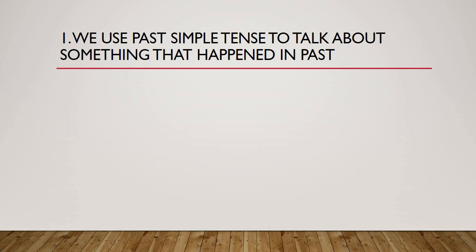Verb ki teen forms hoti hain — aapko pata hoga. First form hoti hai jo present simple mein use hoti hai, second form past simple mein use hoti hai, aur third form ke baare mein main aapko aage bataonga. Is tense mein second form of the verb use hoti hai: subject plus second form of the verb plus object. Let's see some examples to understand past simple tense properly.